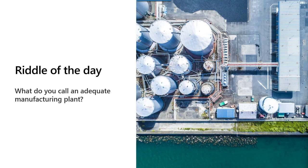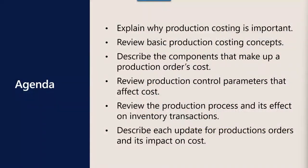Let's take a quick look at the agenda and objectives for today's tech talk. We'll start with an explanation of production costing, its importance, and basic concepts. Then we'll cover the components that make up production costing and the parameters that control behavior, followed by the production process and transactions that affect cost. Keep in mind we're only looking at production orders today, though the same concepts largely apply to batch orders. We will not be covering variance analysis today — that will be in the new part seven. As always, we'll wrap up with recommendations and resources.